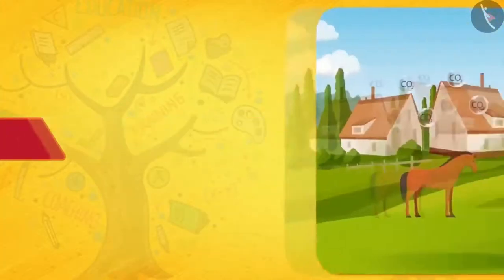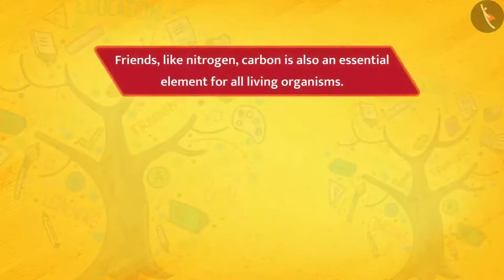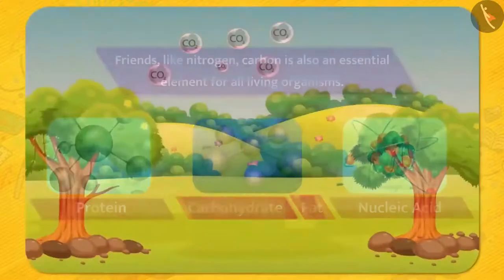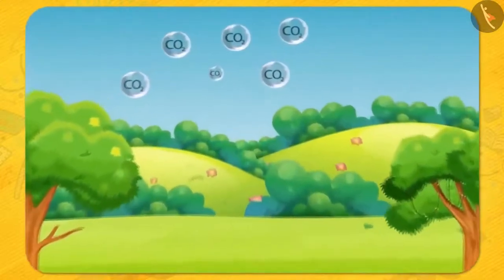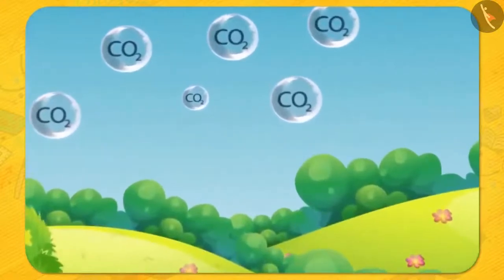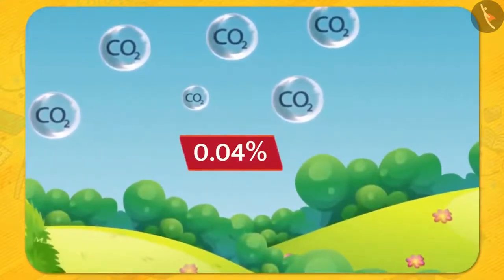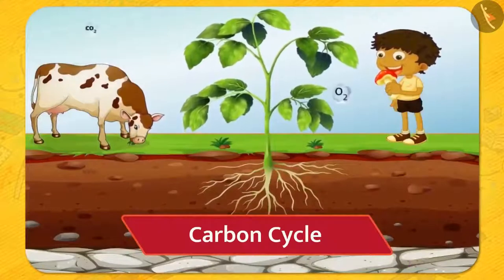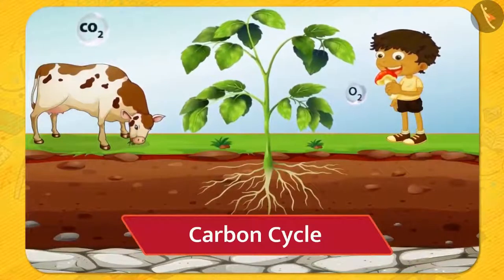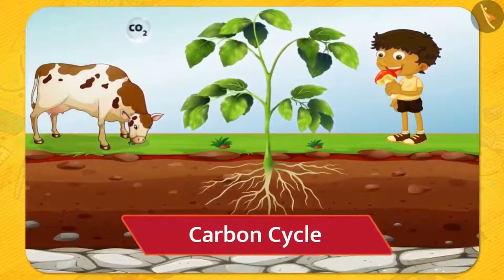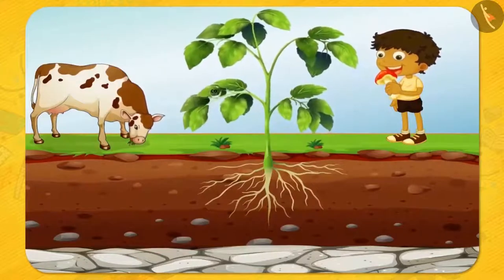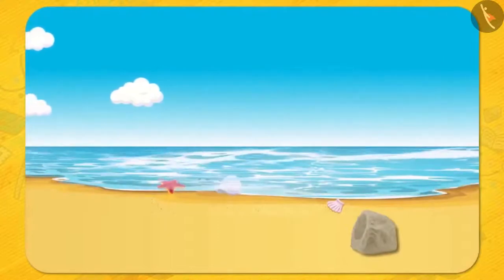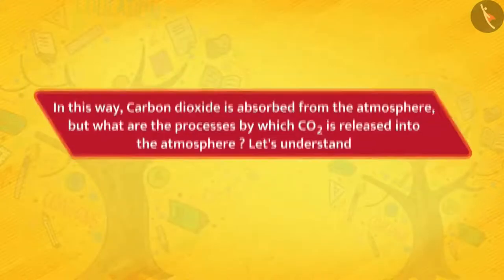Carbon cycle. Friends, like nitrogen, carbon is also an essential element for all living organisms. It is an important part of compounds like protein, carbohydrate, fat, and nucleic acid. Carbon is found in the atmosphere in the form of carbon dioxide. About 0.04% of the atmosphere is carbon dioxide and its percentage almost remains constant. Trees absorb carbon dioxide present in the atmosphere and prepare their food by the process called photosynthesis. Marine animals also absorb carbon dioxide dissolved in water and make their own shells. In this way, carbon dioxide is absorbed from the atmosphere.